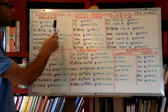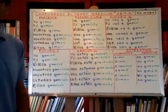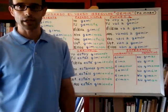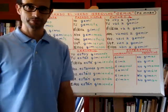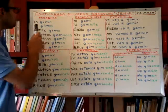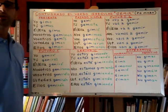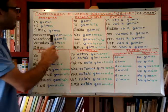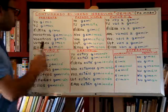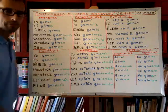So, let's begin conjugating the verb gemir, which means to moan. Yo gimo — I moan. For example, yo gimo de dolor means I moan in pain. Tú gimes — you moan. Él gime or ella gime — he moans or she moans. Nosotros gemimos — we moan. Vosotros gemís — you plural moan. Ustedes gemen — you plural moan. And ellos gemen — they moan.